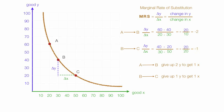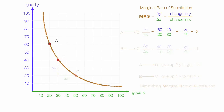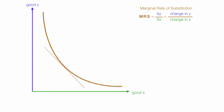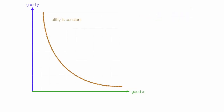This is called diminishing marginal rate of substitution. Now for some calculus: when I move points A and B really close to each other, you'll see that the slope of the tangent line is the marginal rate of substitution. This slope is not constant and changes throughout. The slope of that tangent line is just the first derivative of the indifference curve.